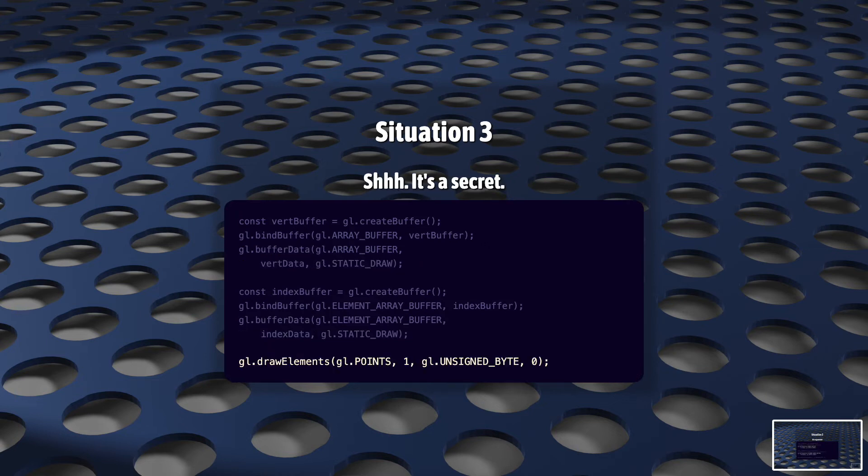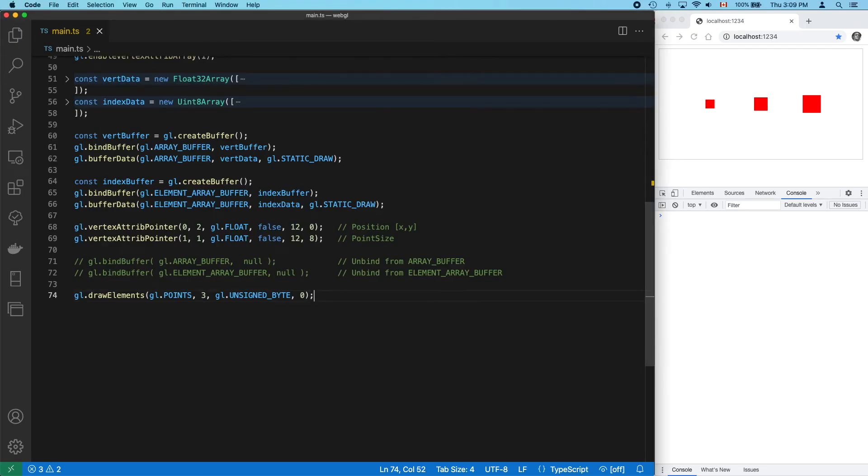And the third situation, and this is the troublesome one. You will be calling a function that does not explicitly mention a target, but that still expects a certain target to be bound already, and if it's not, the function throws an error. Again, let's return to drawElements. When you call this function with nothing bound to arrayBuffer, that's okay, but if you don't have a buffer bound to elementArrayBuffer, you'll throw.